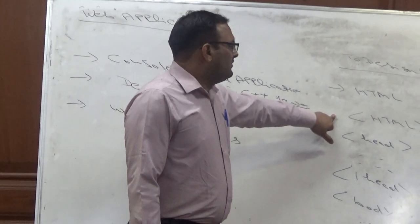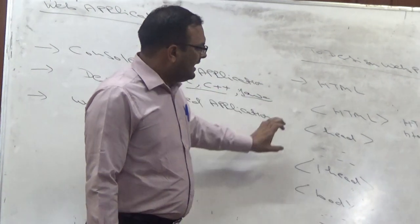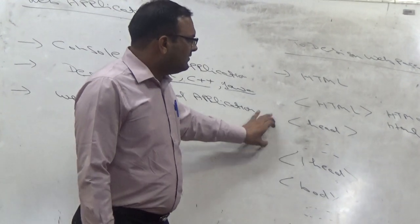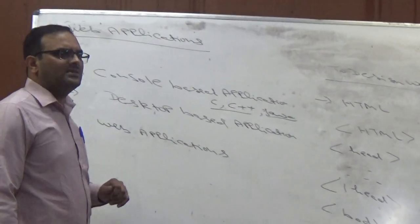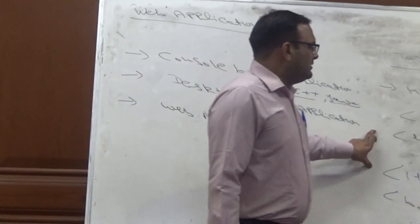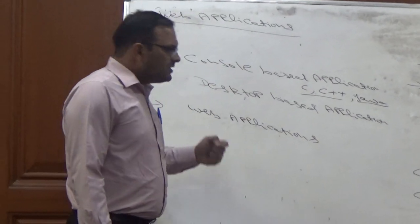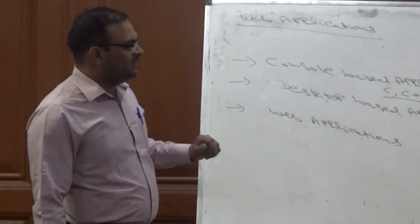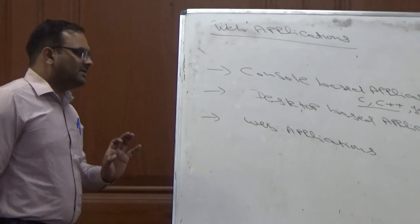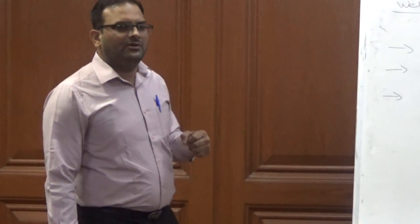An HTML page starts from the HTML tag and has two sections: the head section and the body section. In the head section we put meta information, but this part is not displayed to the user. If we want to show text or content, we use the body part. The body contains everything the user can see displayed in the web browser.